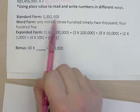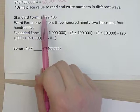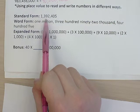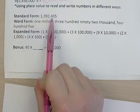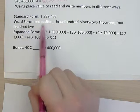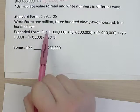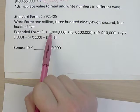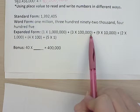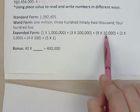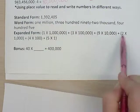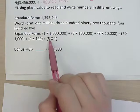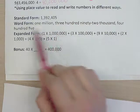So our standard form again is just the digits listed out how you would write your number. Your word form is, in words, one million three hundred ninety-two thousand four hundred five. That is my number written in words. And then in our expanded form, you're taking each digit and you're writing out its value. The 1 is in the 1 millions place. The 3 is in the 300,000s. The 9 is in the 90,000s. The 2 is in the 2,000s. The 4 is in the 400s. There's no digit in the 10s. And then the 5 is in the ones. So that's your expanded form.